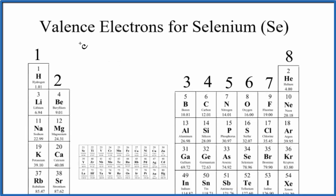There are two main ways to find the number of valence electrons for selenium, that's Se. The first is to look at the periodic table and look at the pattern for valence electrons.